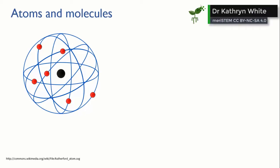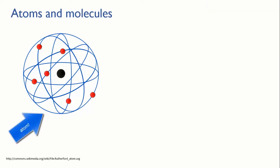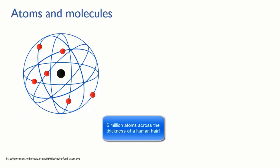What are those particles? We call them atoms. Atoms are ridiculously tiny, about 1×10^-10 meters across. That means you can fit about 6 million of them across the width of a human hair.